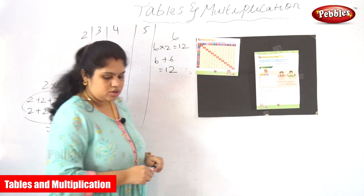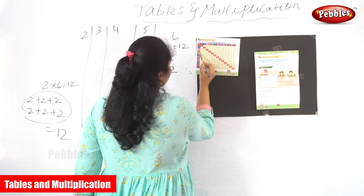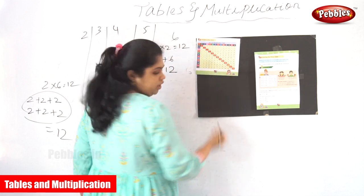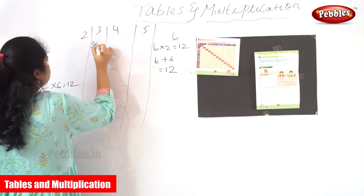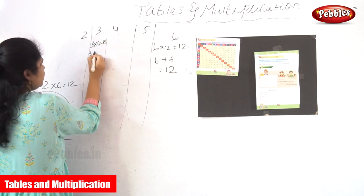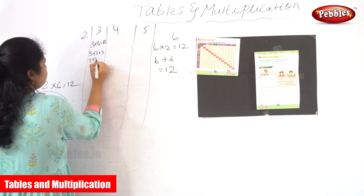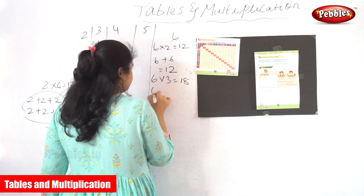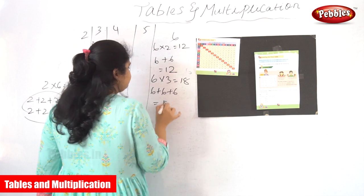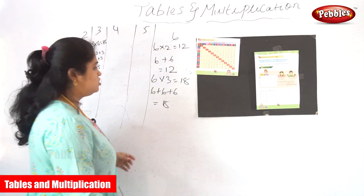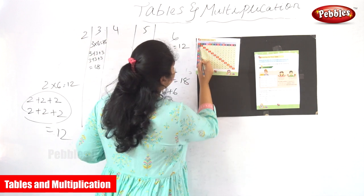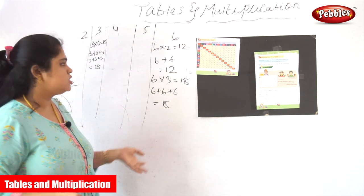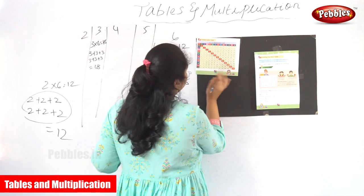3 into 6 is equal to 18. See here — 3 comes for 6 times, so the answer will be 18. Or if 6 into 3 is equal to 18, the 6 comes for 3 times and the answer will be 18. Every multiplication is an addition. So next, 5 into 6 is equal to 30. The same thing — 6 into 5 is equal to 30.